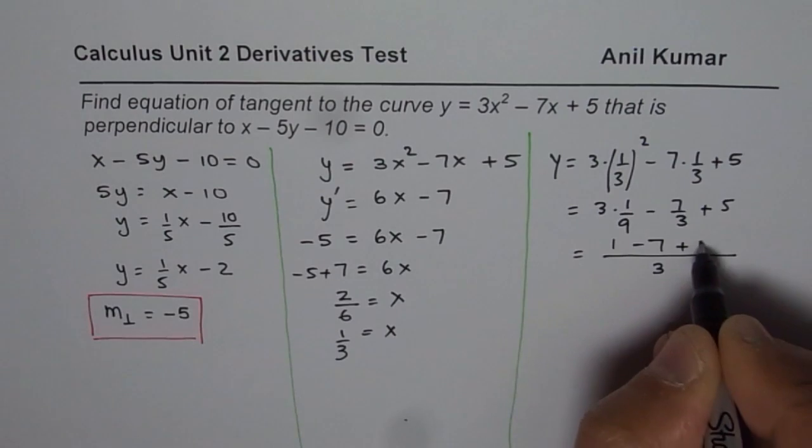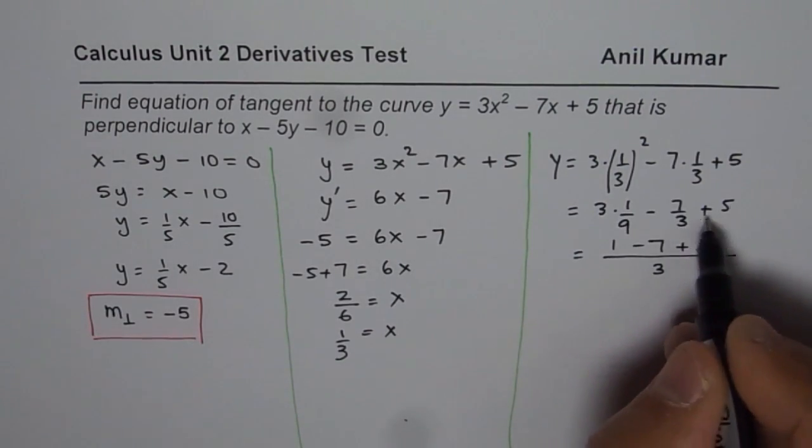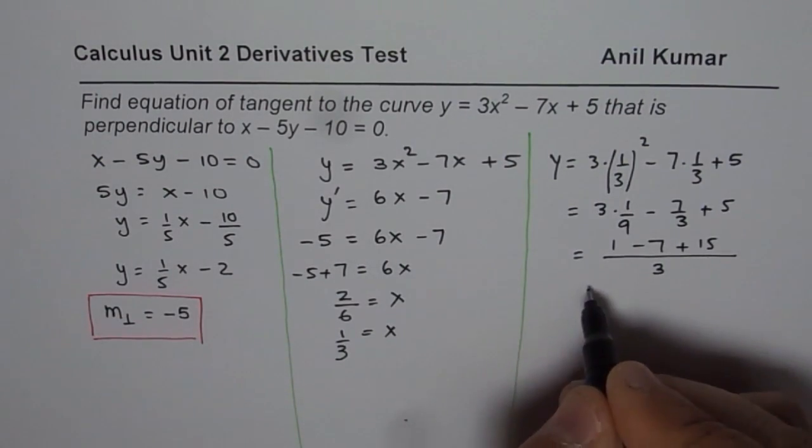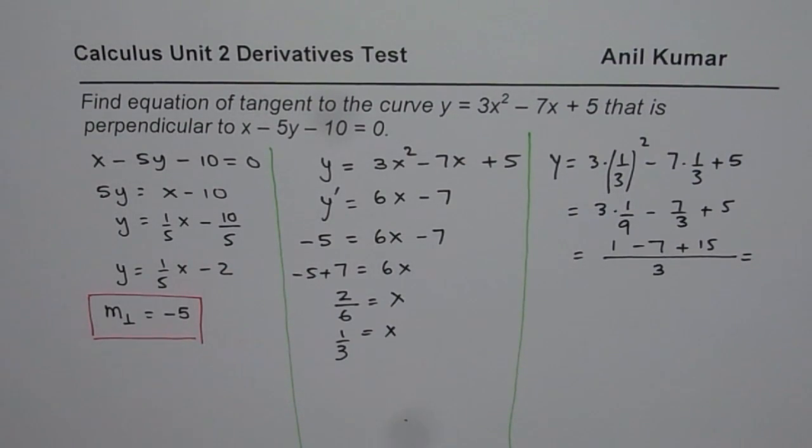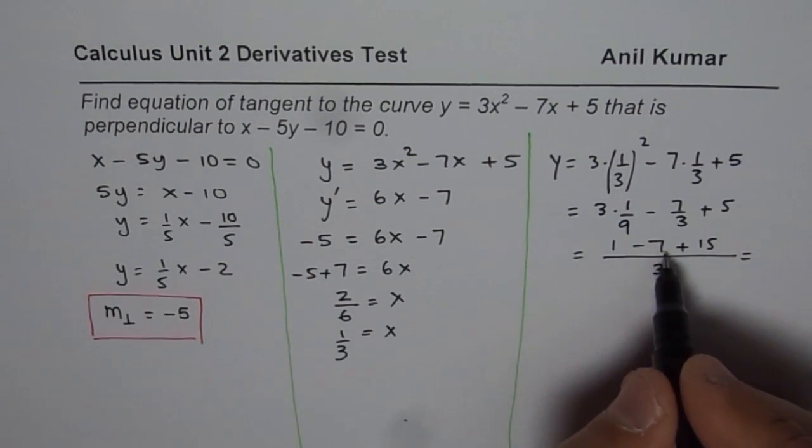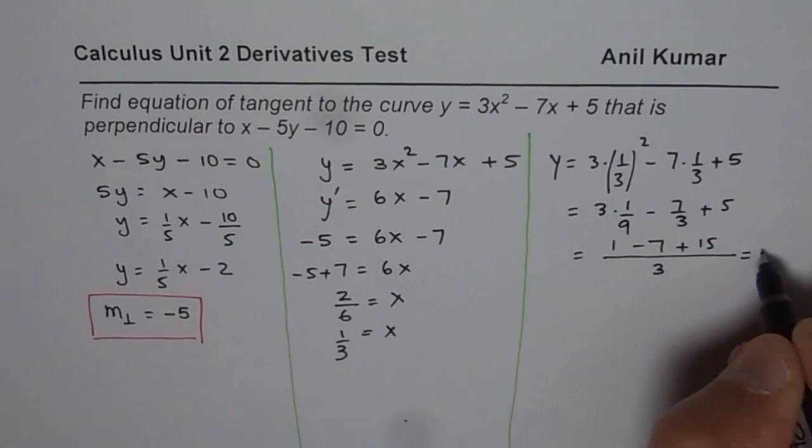1 minus 7 plus 15, 3 times 5. So that gives you the y value which is 16 minus 7 or 9 over 3 which is 3.